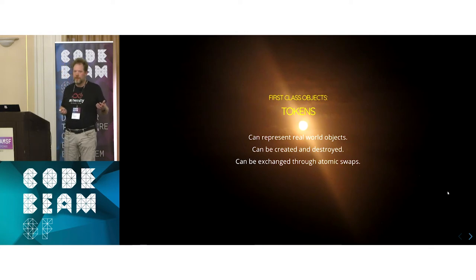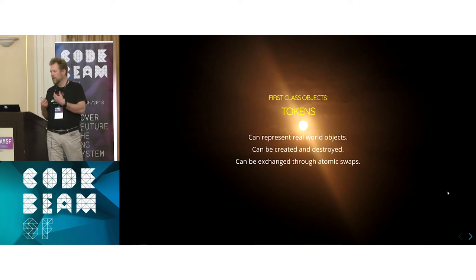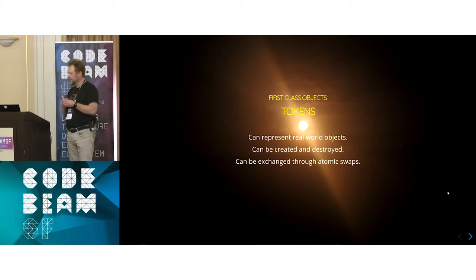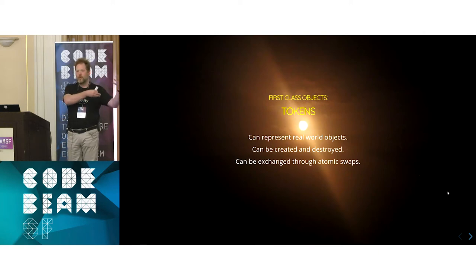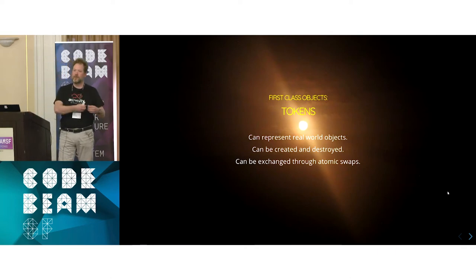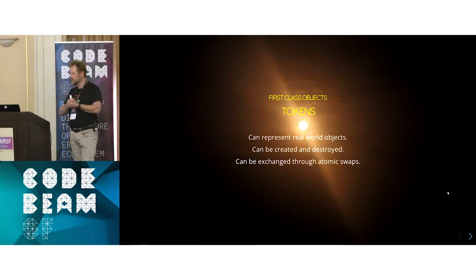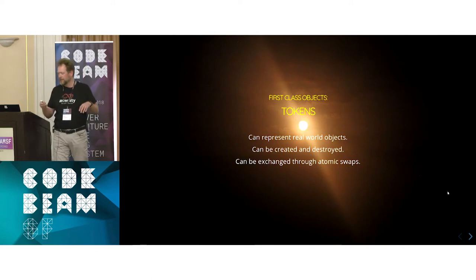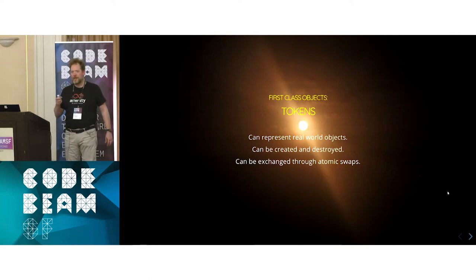Then we have tokens. Tokens can be used to represent something in the real world with value, or just a new cryptocurrency. You can create a new type of token and set up the rules for it — whether there will be a finite amount, whether you can create new tokens, and whether they are unique tokens or just accounts with tokens. You can exchange between different types of token with atomic swaps, and all this is first-class transactions on the chain.